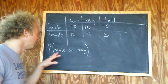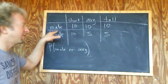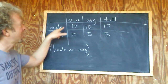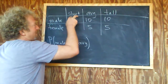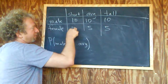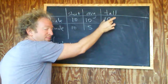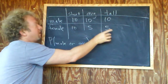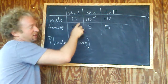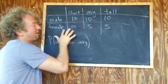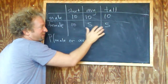We have a table and we have a probability question. In this table we have male and female, and we have short, average, and tall. There are 20 people that are short because 10 plus 10 is 20. There are 15 people that are average and 15 people that are tall. There are 30 males because 10 plus 10 plus 10 is 30, and there are 20 females because 10 plus 5 plus 5 is 20.